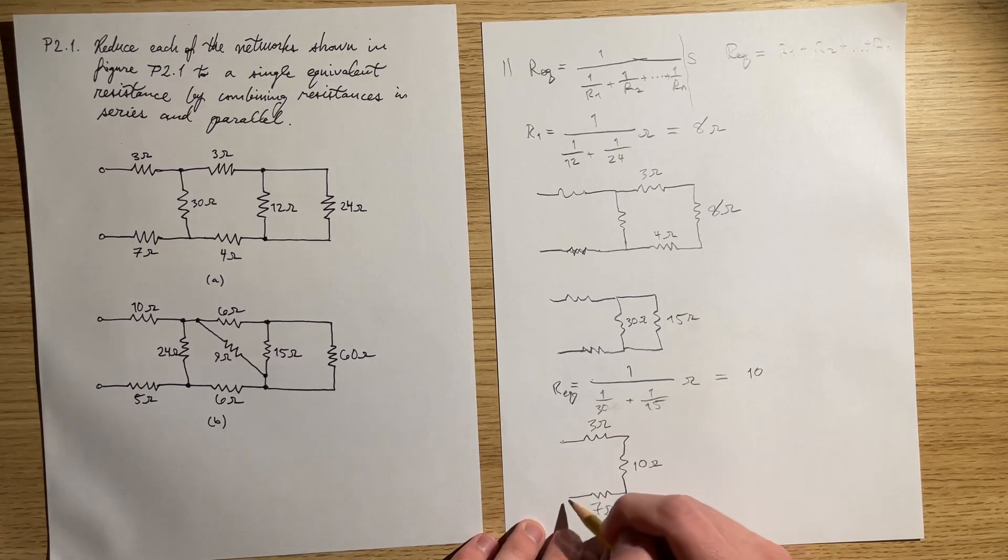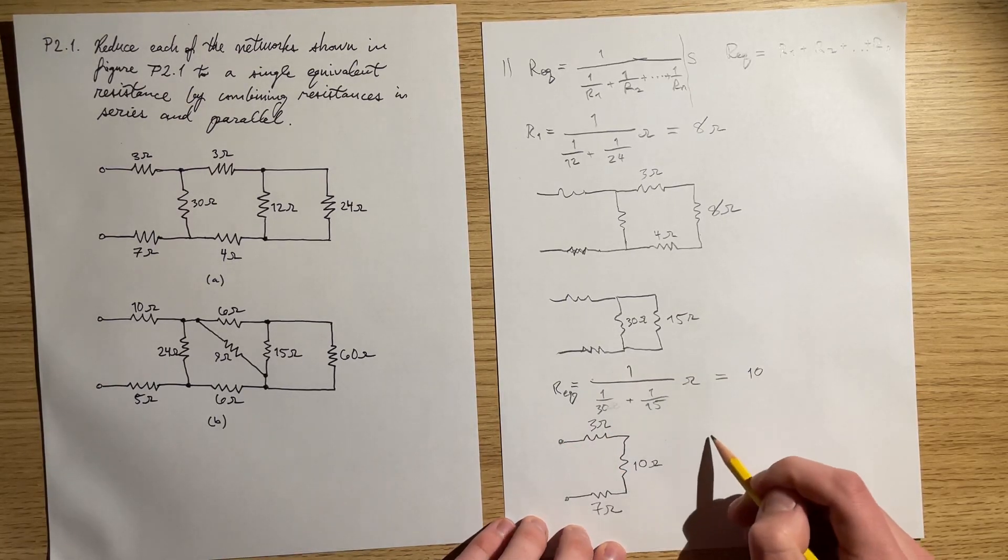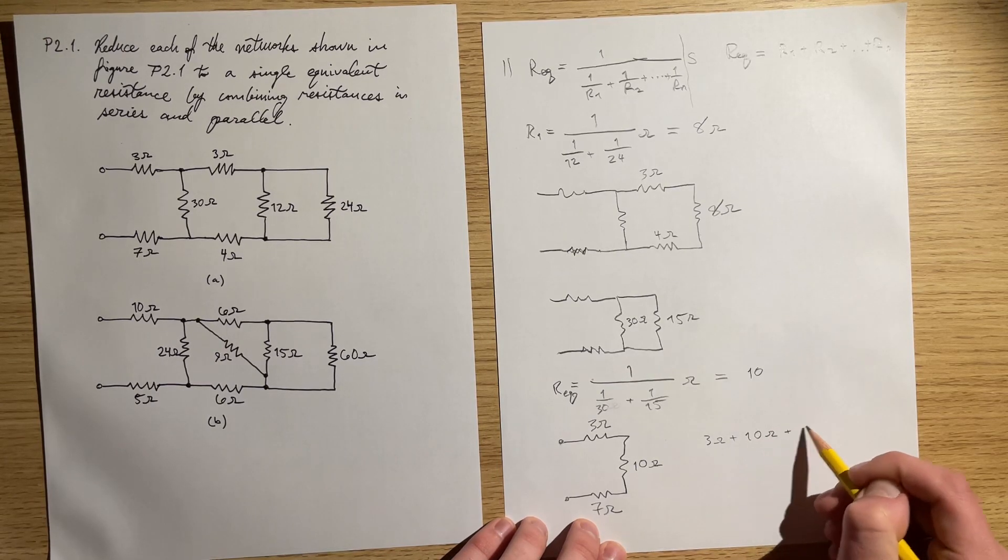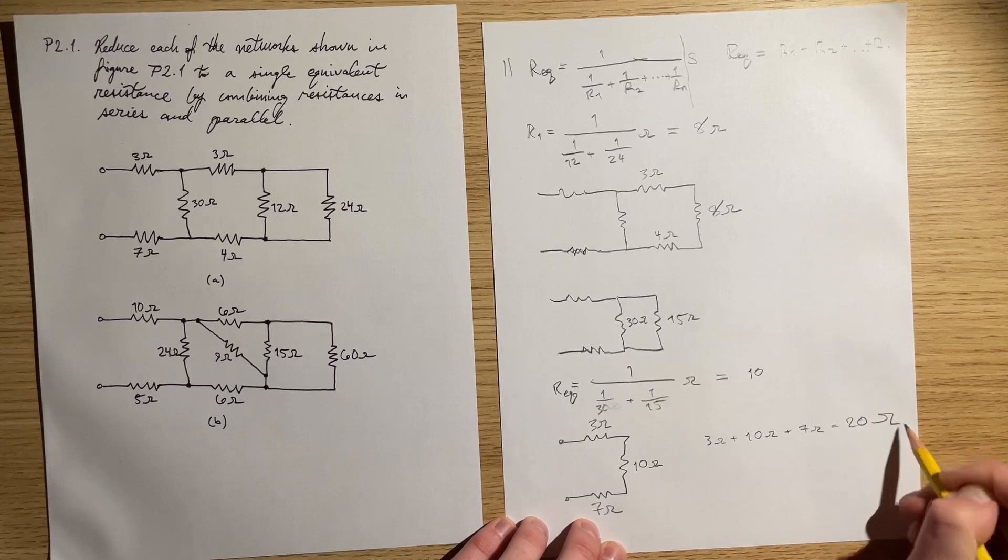And as you can see, these are all in series. So 3 plus 10 plus 7 is equal to 20 ohms.